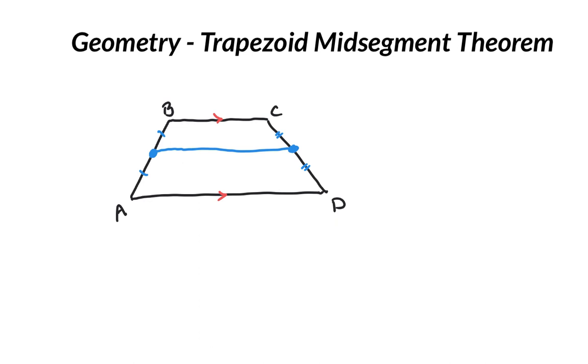Number one, I've created a new parallel side, and therefore we have some angle relationships. This and this will be equal because they are corresponding. This and this will be equal because they are corresponding. But even more than that,